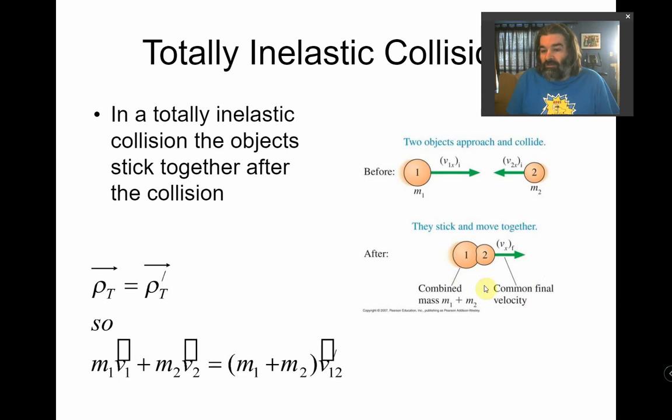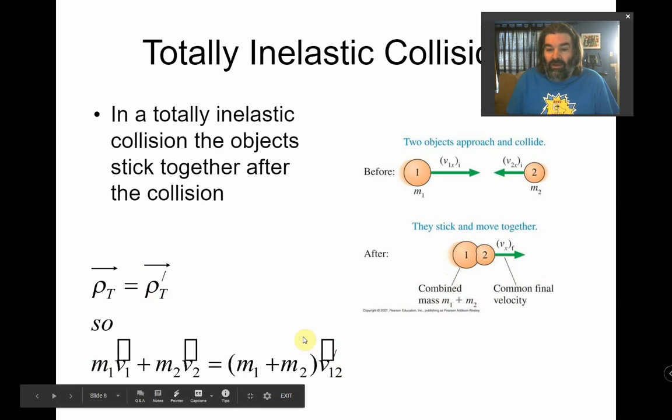And because they're one object, they have a common final velocity and they have a combined mass. So this equation can simplify. You can do the common factor ahead of time and write it as this right off the bat.